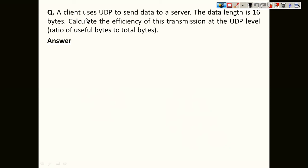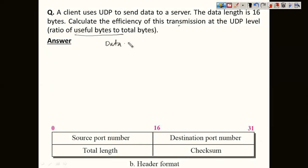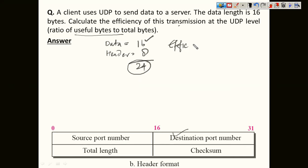Next question: a client uses UDP to send data to a server. The data length is 16 bytes. Calculate the efficiency of this transmission at the UDP level. Efficiency is the ratio of useful bytes to total bytes. The UDP header is 8 bytes, so the total packet size is 24 bytes. Efficiency = 16/24 = 2/3.